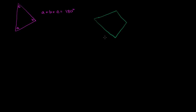So the way you can think about it with a four-sided quadrilateral is, we already know that the measures of the interior angles of a triangle add up to 180. So maybe we can divide this into two triangles. So from this point right over here, if we draw a line like this, we've divided it into two triangles.